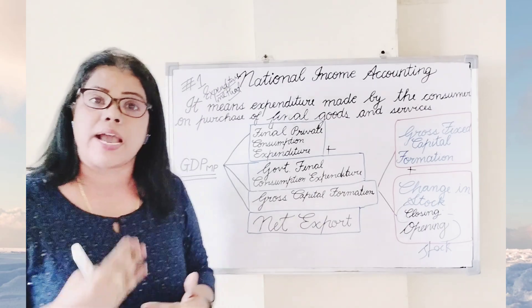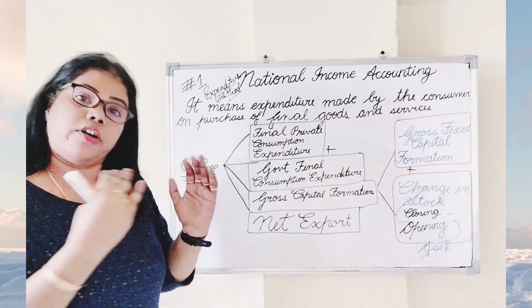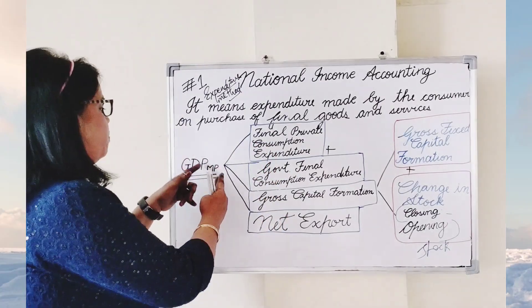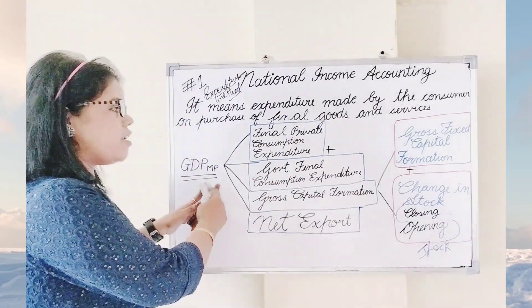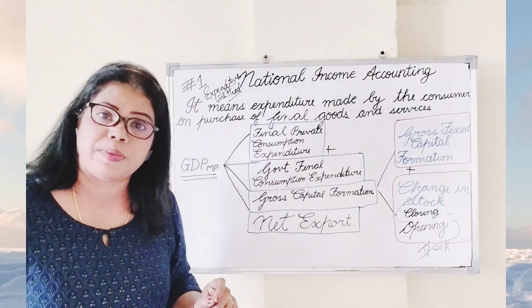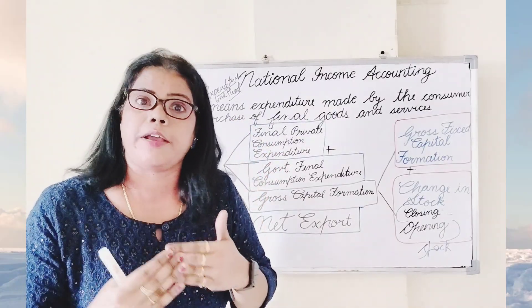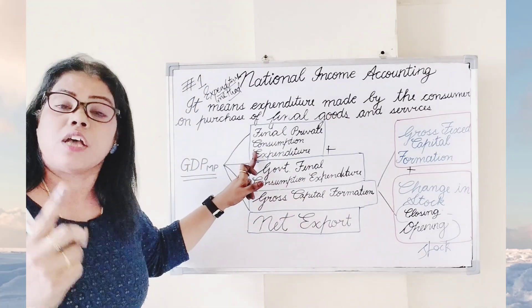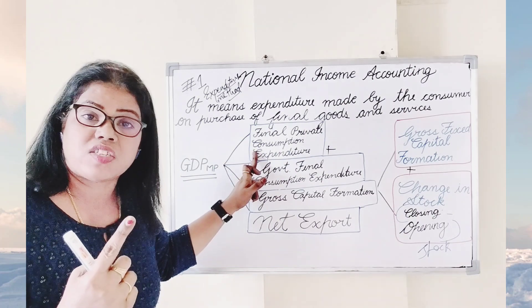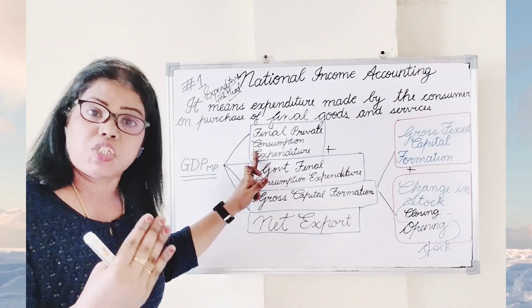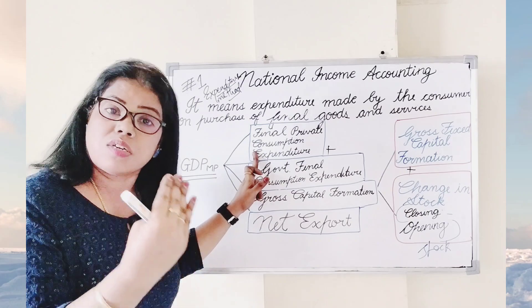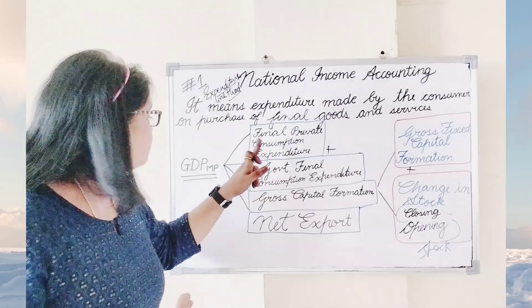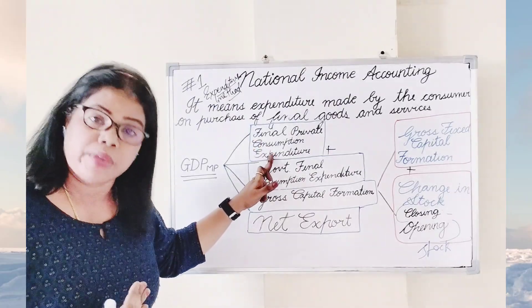So how do we calculate national income by expenditure method? Don't worry, nothing is very difficult here. How to calculate national income with the help of the expenditure method, also called the disposable income method? First of all, we have to focus on private final consumption expenditure — meaning the private individuals or household buying final goods and services — then there exists the private final consumption expenditure.